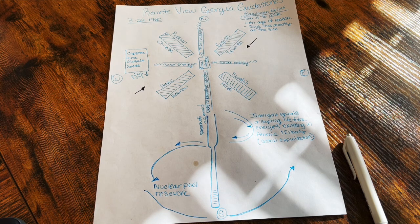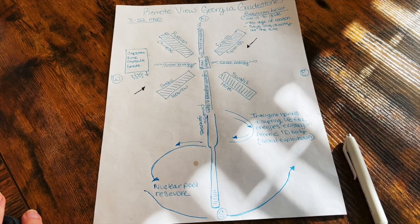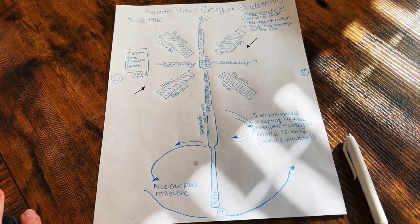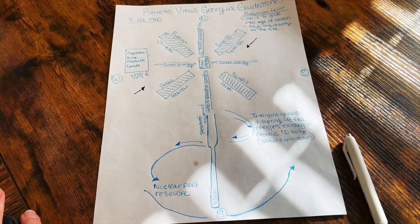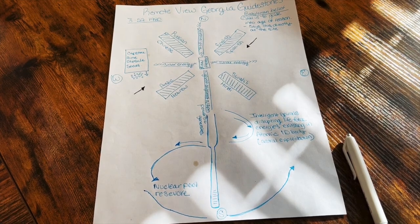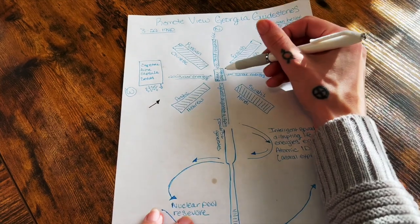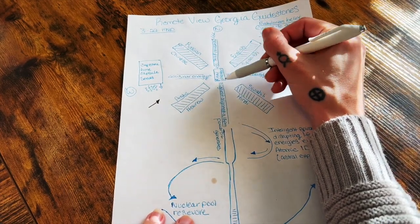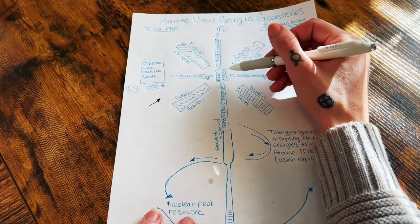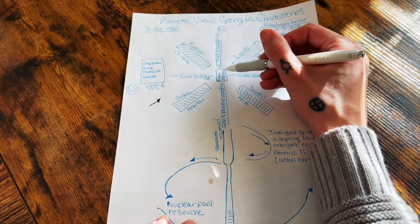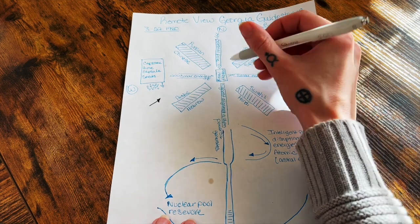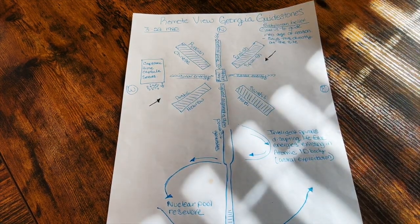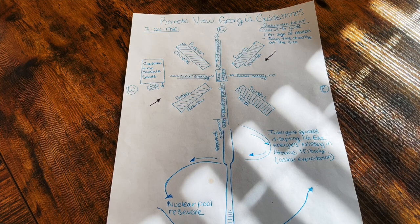Georgia Guidestones is a place that they're doing this, and there's actually high technology to do it. Another thing that I think the slit in the center, because they have a slit in this capstone like down in the main running granite stone underneath it, I think that they are allowing intelligent plasma in.